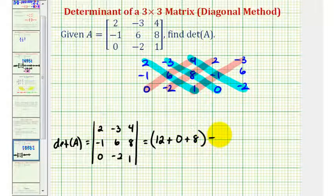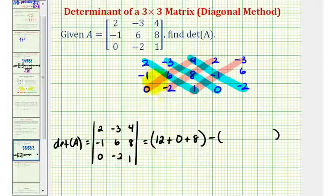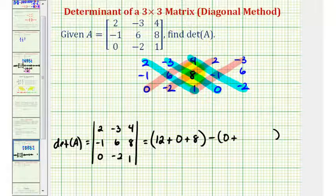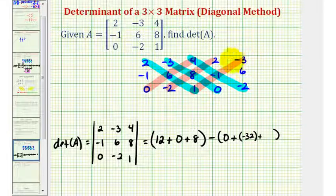Then we subtract the sum of the product of the red diagonals, or the diagonals from the upper right to the lower left. So we'll have four times six times zero, that's zero, plus two times eight times negative two, that's negative thirty-two, plus negative three times negative one times one, which is positive three.